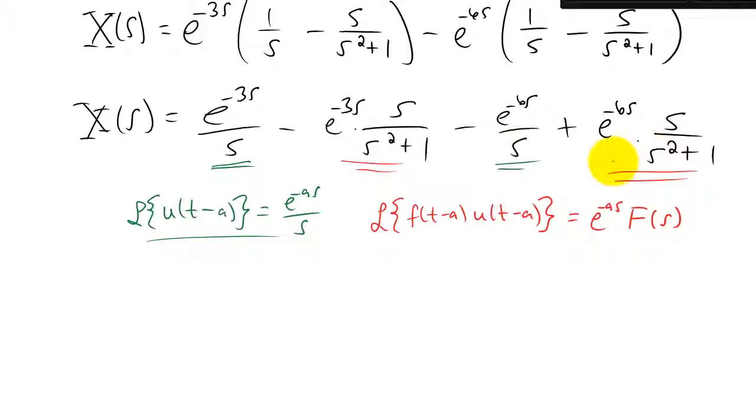Now for both the second and the fourth term the capital F of s from this formula here is just going to be s over s squared plus 1. Do an inverse transform on that to get little f of t and you get the cosine of t. Of course the inverse transform of this entire term here requires us to use an a value of 3. And the inverse transform of just this term is going to then be cosine of the quantity t minus 3 times the step function u of t minus 3.